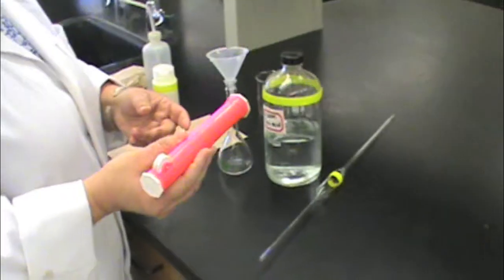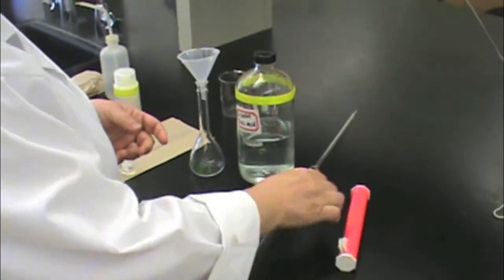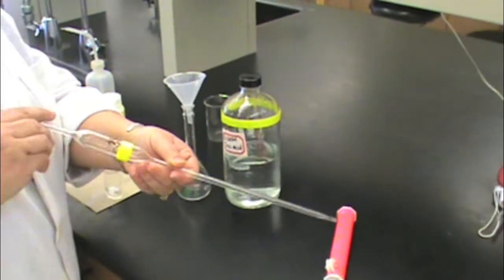In this video we will show you how to quantitatively prepare a Tris buffer. You will need a pipette filler, a 25ml volumetric pipette,